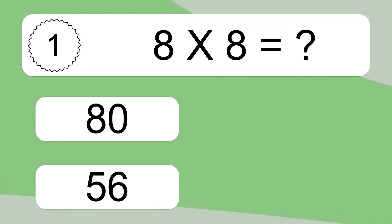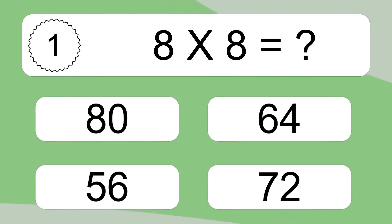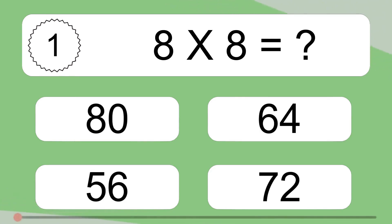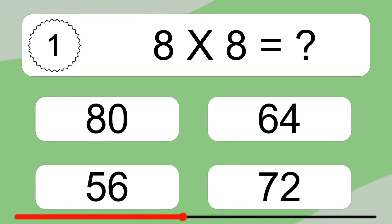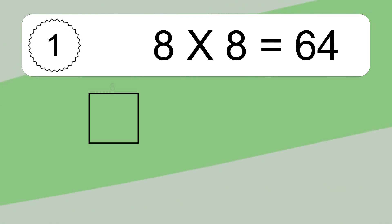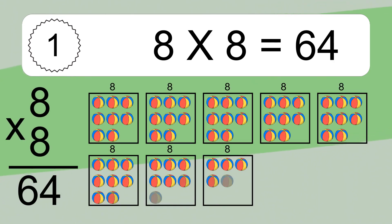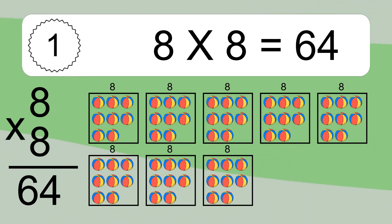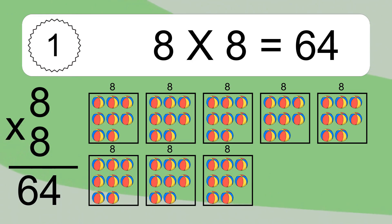8 times 8 equals what? 8 times 8 equals 64. We have 8 boxes, and each box has 8 colorful balls inside. If you count all the balls in all the boxes together, you will have 8 times 8 balls. This equals 64 balls.